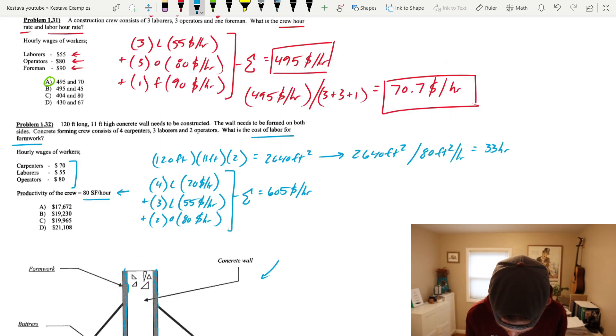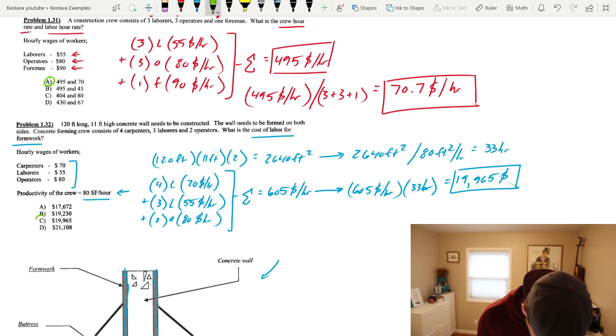Then, we can use that 33 hours down below here in combination with our crew hour rate, like we solved for in the previous problem, by just taking $605 per hour for the crew, and we know the crew is going to take 33 hours to construct the wall. That, units cancel out, hours cancel out, to give you a lump sum in dollar value of $19,965. So, going green, that's going to be right on the money. Answer C.